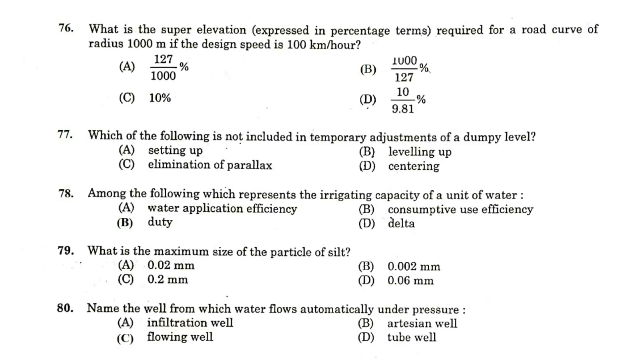What is the superelevation expressed in percentage terms required for a road curve of radius thousand meter if the design speed is 100 km per hour? Thousand divided by 127 percentage.